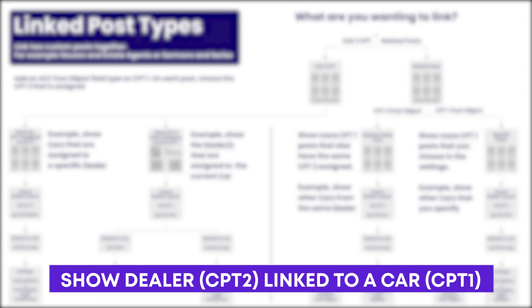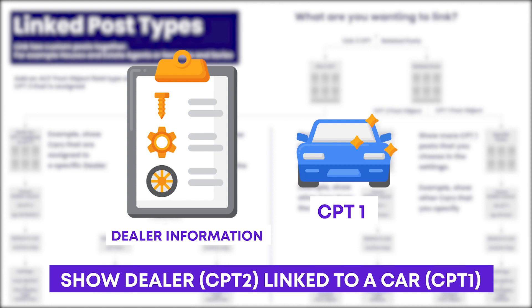The second way is where you have custom post type two linked to custom post type one — so the dealership linked to the car. When you're looking at that specific car's page, you'll see the dealership in maybe the right-hand column associated with that car. It's a great implementation. We also need to talk about the other implementation, which is going to be the related link posts.